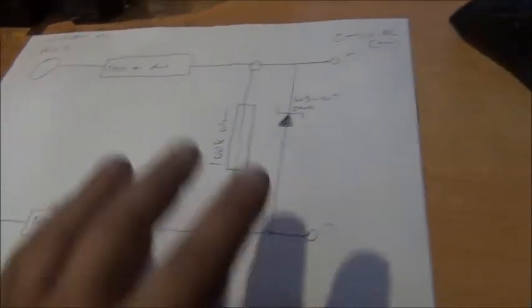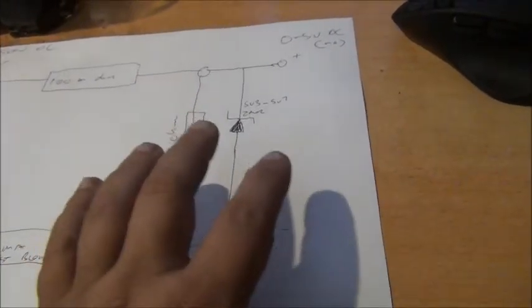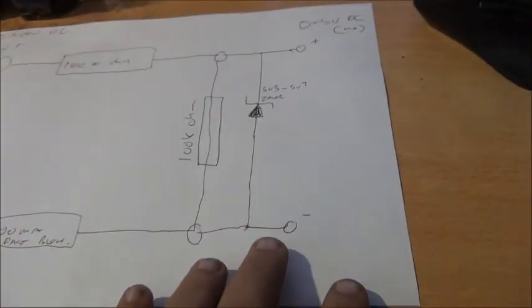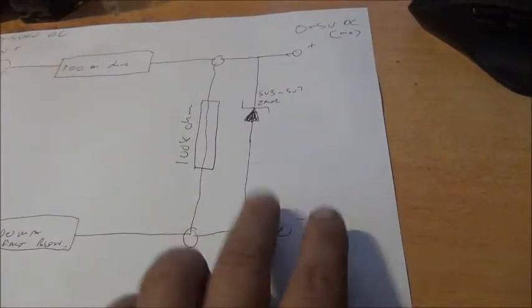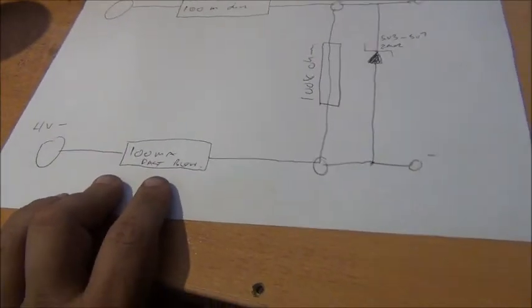And the idea behind this is that if something goes wrong and it tries to draw more power than - sorry - more voltage tries to come through than the 5 volts odd, then the zener will clamp and it will send too much current through the 100mA fuse and blow it.